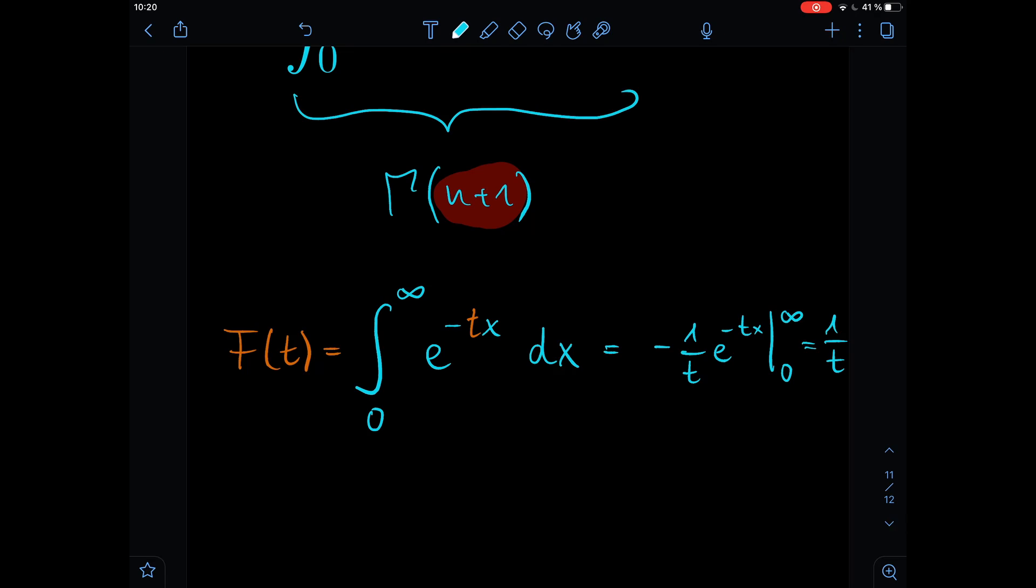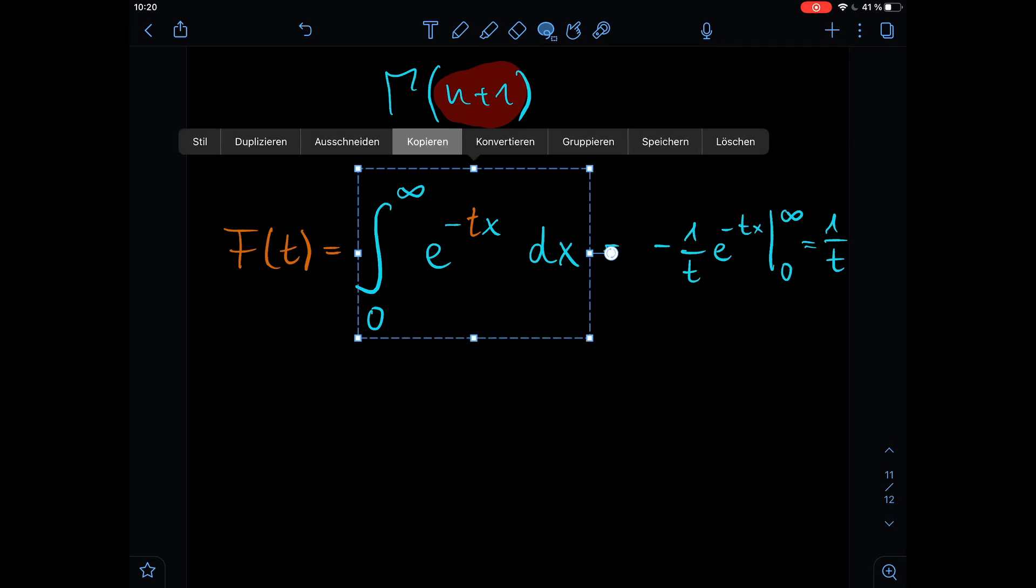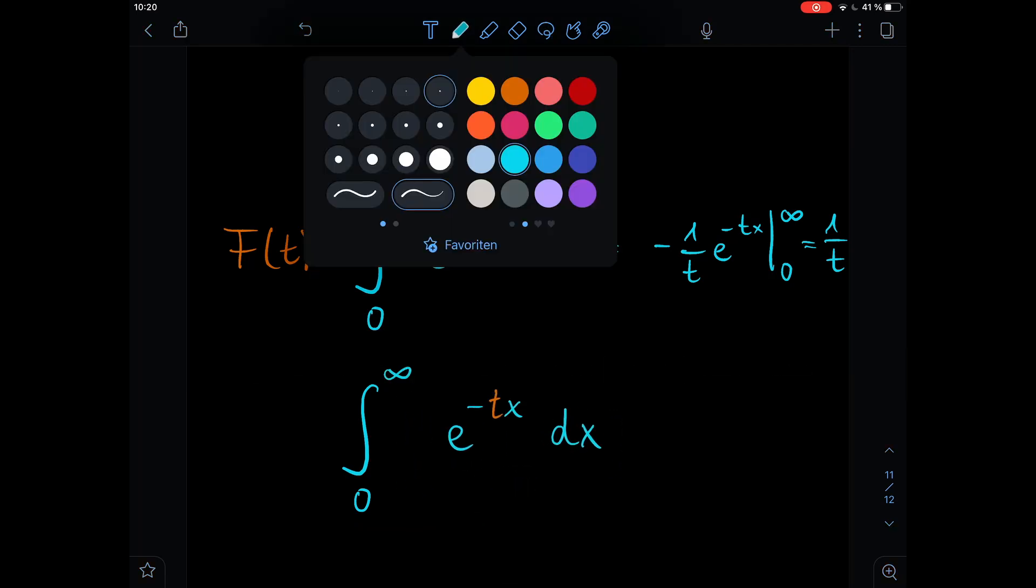So our integral is equal to 1 over t, and now we're going to apply the actual Feynman technique. So first we're going to take this, we just copy it and we put it down here.